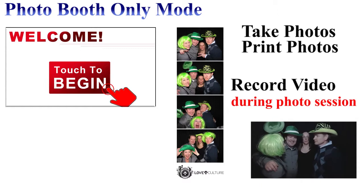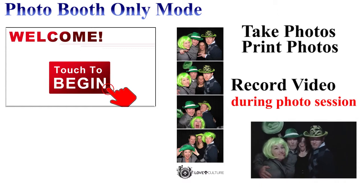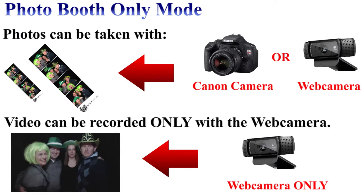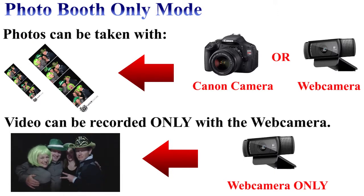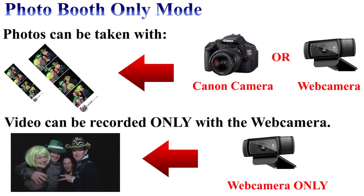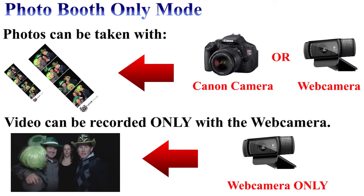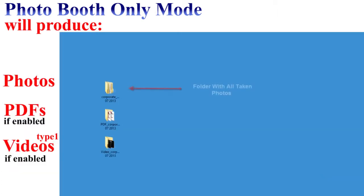This mode will enable you to take photos, print photos, and record video during photo sessions. Please note that to take photos you can use either the Canon camera or web camera, and the video recording does require a web camera.